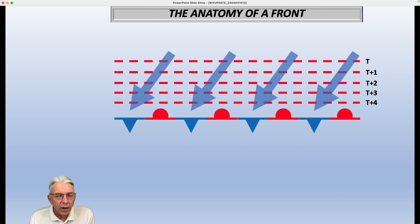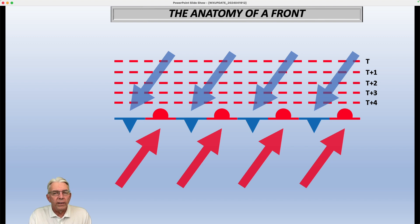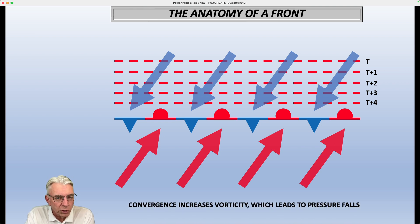Okay, so let's say on the cold side of the front, we have a northeasterly flow at the surface. And then on the warm side, we have a southwesterly flow. And in this situation, because these arrows are coming together, we have convergence going on along that front.